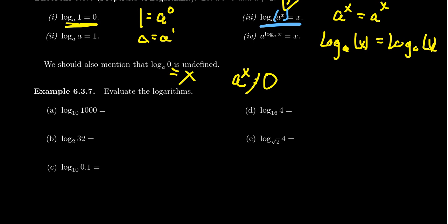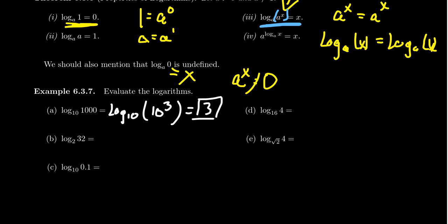For example, if you take log base 10 of 1,000 — can we write 1,000 as a power of 10? The answer is yes. If your first digit is a 1 and you count the zeros, that gives you the power of 10. So this is log base 10 of 10 cubed. What power of 10 gives you 10 to the third? The answer's in the question — the log base 10 of 1,000 equals 3. Here's another example: log base 2 of 32. What power of 2 gives you 32? Well, 32 equals 2 to the fifth — 2, 4, 8, 16, 32. So log base 2 of 32 equals 5.